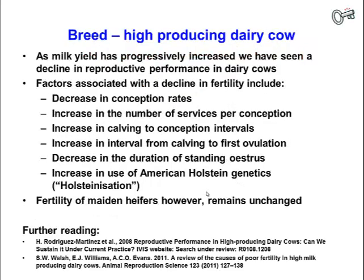First of all, let's look at the high-producing dairy cow and what's been happening. There's been a negative trend in reproductive performance for the high-producing dairy cow over the past 20-30 years. Over that period of time, milk production has progressively increased, but we've seen a progressive decline in reproductive performance in dairy cows.